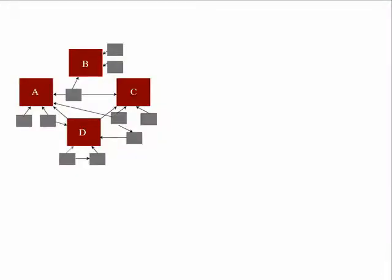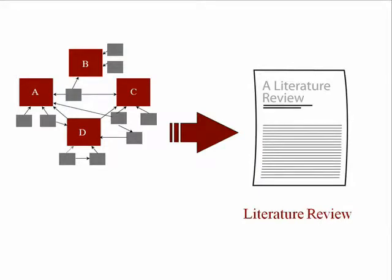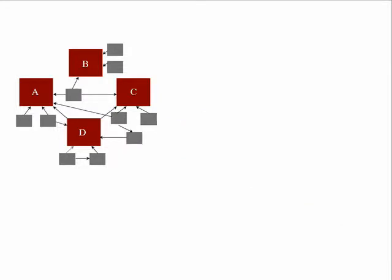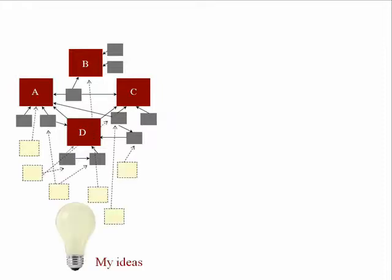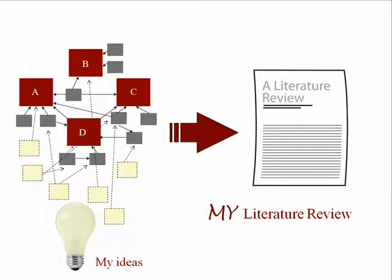So how do you turn a network of articles into a cohesive review of the literature? How do you find and tell the story behind your research topic? Reviewing the literature is like participating in a conversation. As you read and evaluate articles, you begin to understand how they are connected and how they form the story that the authors are telling. Then you start to formulate your own response or contribution. Discovering relationships in the literature and developing and connecting your own ideas to it is what helps you turn a network of articles into a coherent review of the literature.